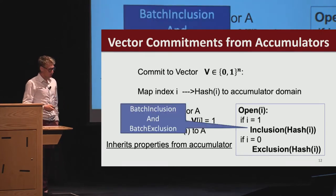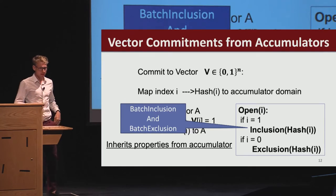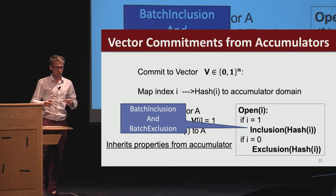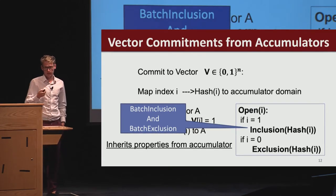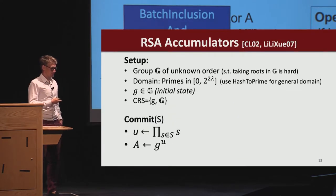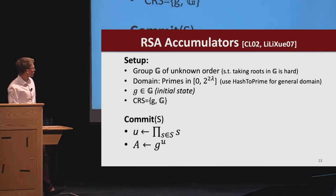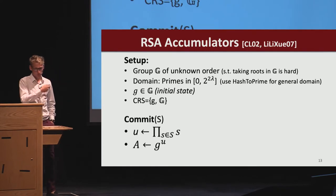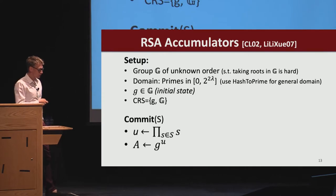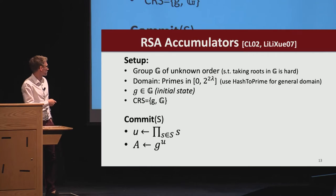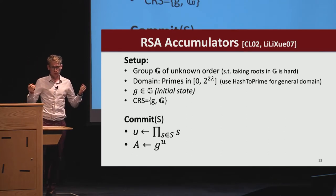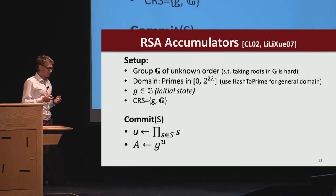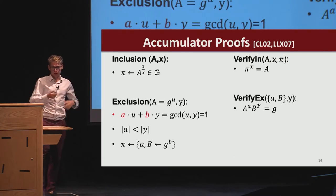To get the sub-vector commitment property, what we need is batch inclusion and batch exclusion proofs. If we have one single inclusion proof saying many bits are equal to one, and one single constant size exclusion proof saying many bits are equal to zero, then we have a constant size opening for an arbitrary number of indices—a sub-vector commitment with all the great properties. Looking at the concrete accumulator construction: we are in a group of unknown order. The domain is primes, we initialize the accumulator with a single random element, and to commit to a set of elements we multiply all the primes together and raise the base g to that product.